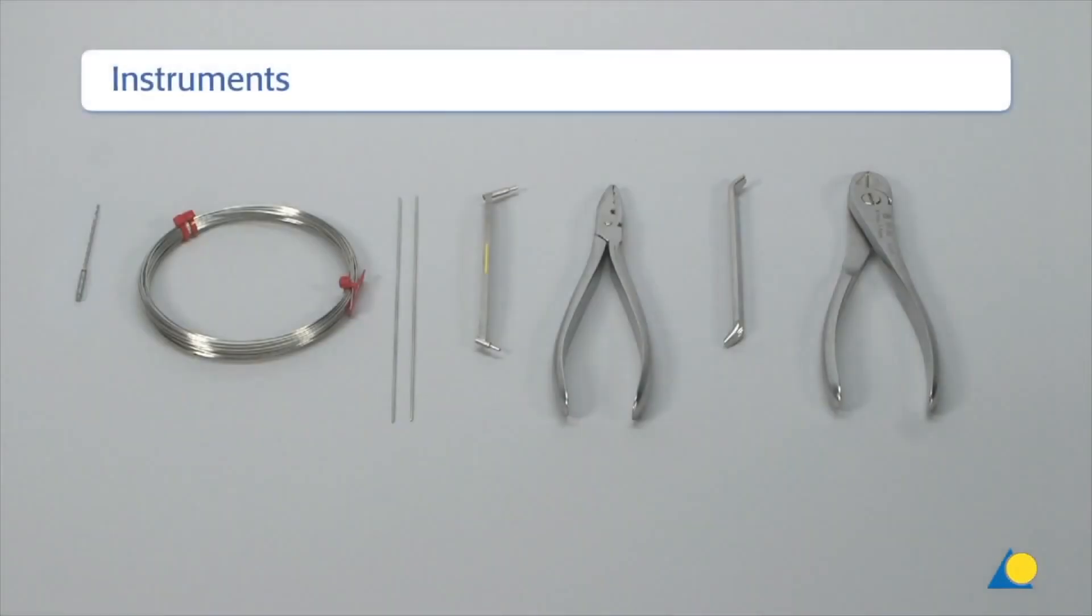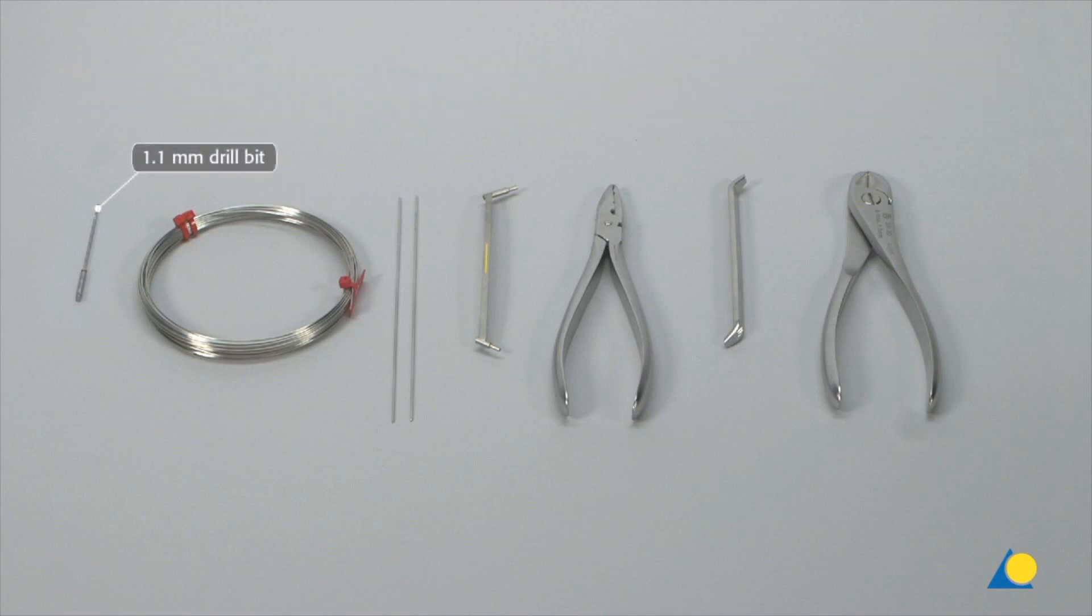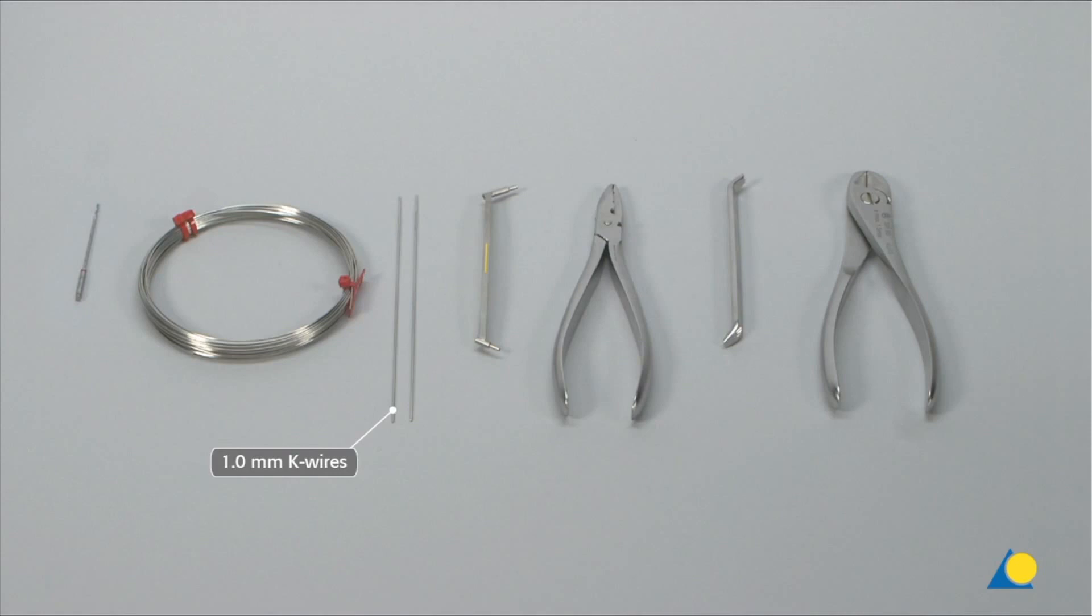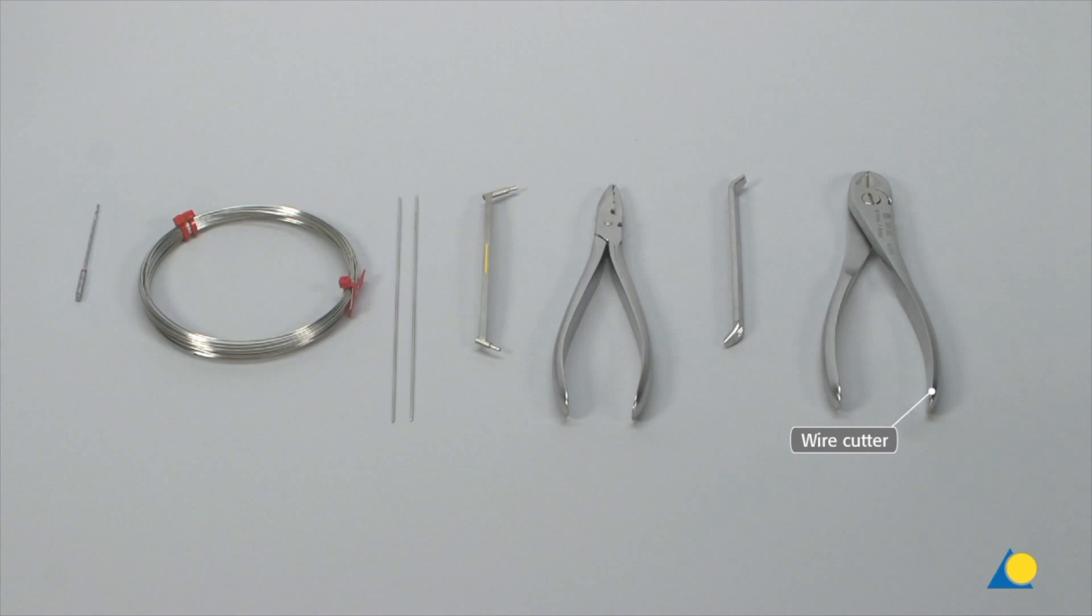The required instruments for reduction and fixation are the 1.1 mm drill bit, the circlage wire, two 1.0 mm K-wires, the 1.3 1.0 double drill guide, the wire bending pliers, the bending iron, and the wire cutters.